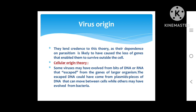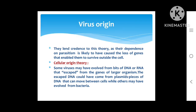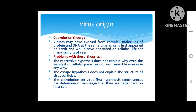The loss of genes enabled them to survive outside the cell. The next theory is the cellular origin theory, also called the escape theory, which proposes that viruses evolved from bits of DNA and RNA that escaped from the genes of larger organisms. That escaped DNA could have come from plasmids — species of DNA that can move between cells — while others may have evolved from bacteria.